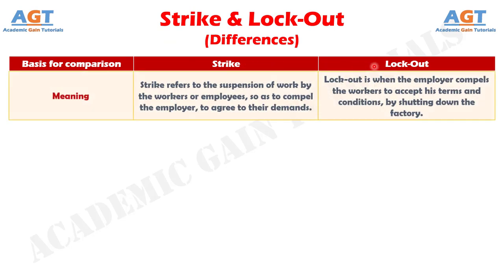Difference No. 1. Strike implies the stoppage of work by an association of workmen working in an industry, as they collectively refuse to work under a common understanding, to show grievance or to compel the management to fulfill their demands. Whereas, lockout is the opposite of strike, as it is initiated by the company's management, which results in psychological pressure on the workman to accept the terms and conditions of the management, or to bear the consequences of the closure of the unit.